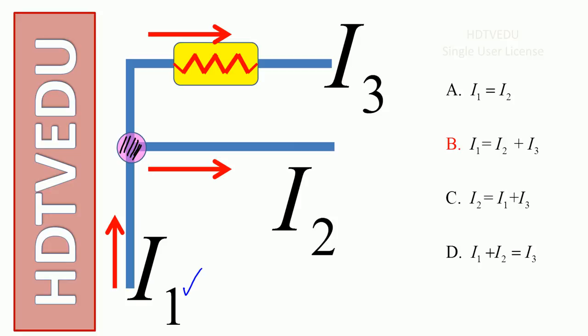What are the currents leaving? We have I2 and I3. So I2 is this way, I3 is this way.